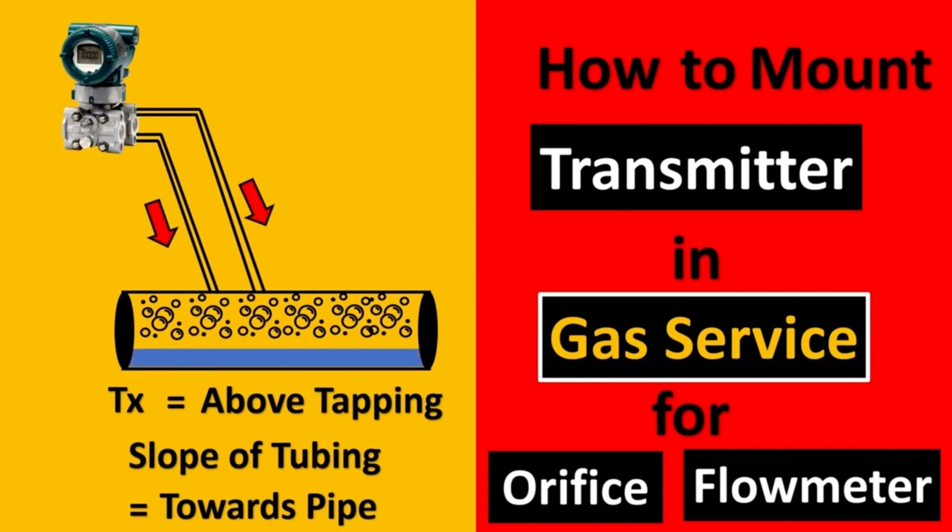What is the use of this? If the gas service also has some liquid entrainment in it, you would not want that to get trapped in your impulse lines. Because of gravity, the fluid is always going to go downward and remain in the pipe, and it won't be a dead leg for the transmitter.